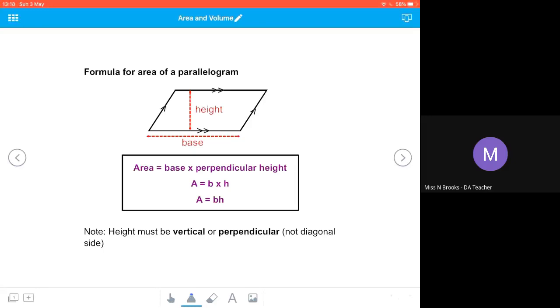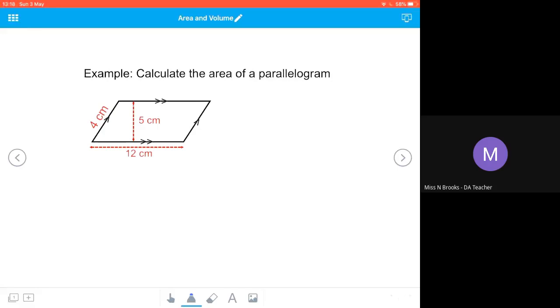So here we've got an example, we want to calculate the area of this parallelogram. So first thing we're going to do is write down our formula, so we've got area equals base times height.